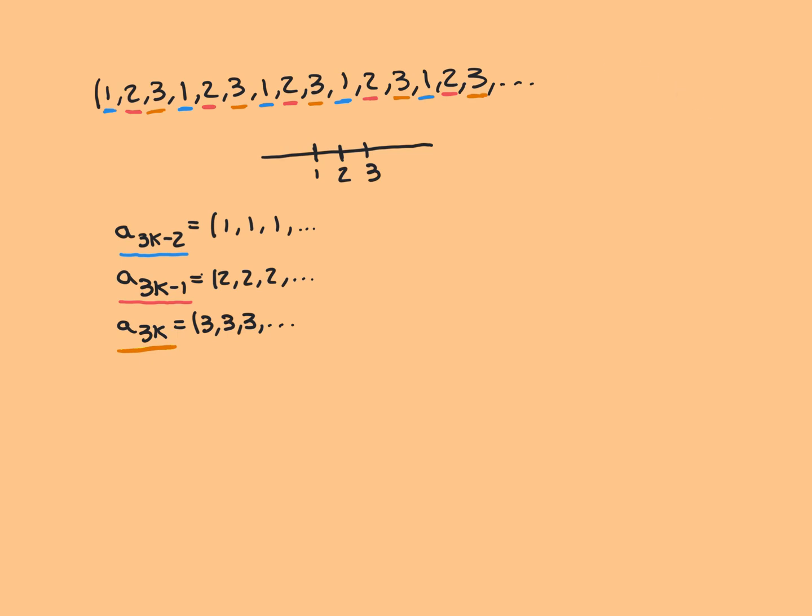This is crucial: you need to take your original sequence, find these subsequences that partition it, and then if you look at what their limits are, that collection of limits is your collection of limit points. If you have this situation, you can easily prove that there are no more limit points in that case, and I'm going to show you how.